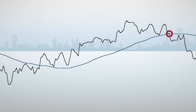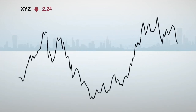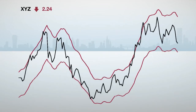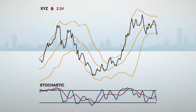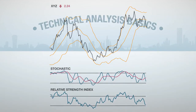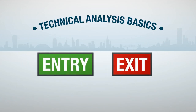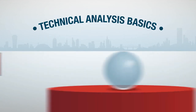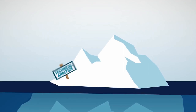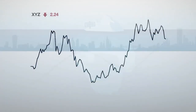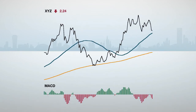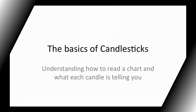Moving average lines are only one of many technical indicators investors may use. Other common indicators include price envelopes, Bollinger bands, stochastic oscillators, and the relative strength index. At this point, we've covered some basics of technical analysis. One thing to keep in mind is that technical analysis can help you identify potential entry and exit signals, but it offers no guarantee of success — after all, there is no way to predict the future. We've only covered the tip of the technical analysis iceberg, and learning how to use these techniques and tools can advance your technical analysis skills.